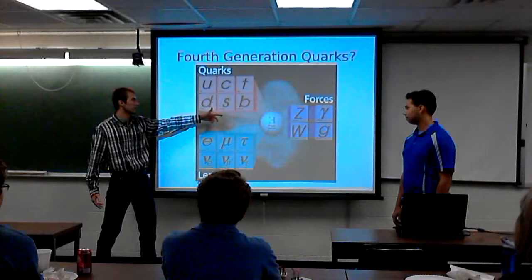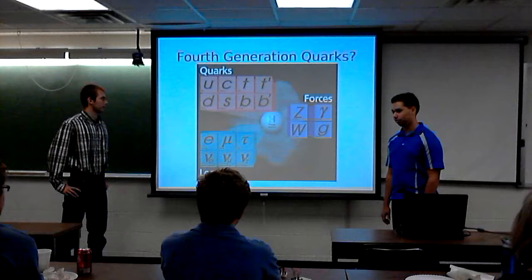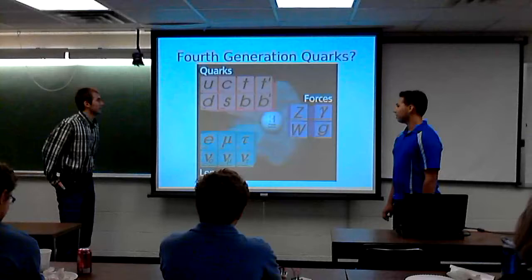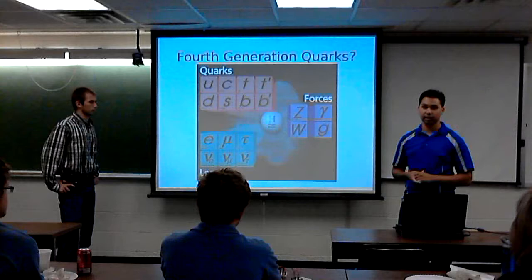But there is hypothesized to be a fourth generation, cleverly named T prime and B prime for — you guessed it — top prime and bottom prime. They're theorized to be extremely heavy, probably with masses in the upper hundreds of giga electron volts. The T prime could be anywhere up to even a tera electron volt, which in particle terms is massive.